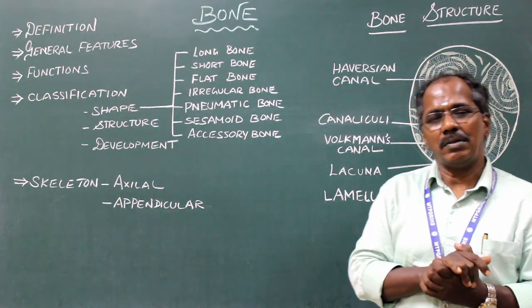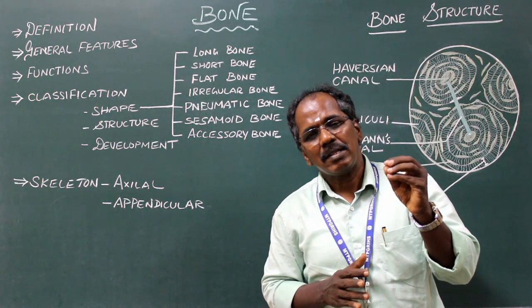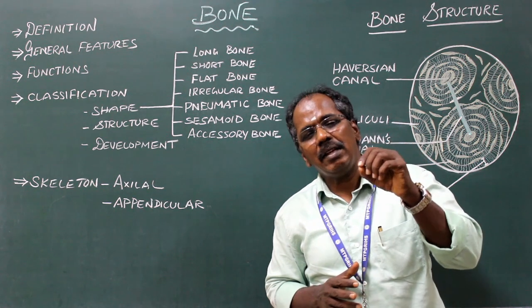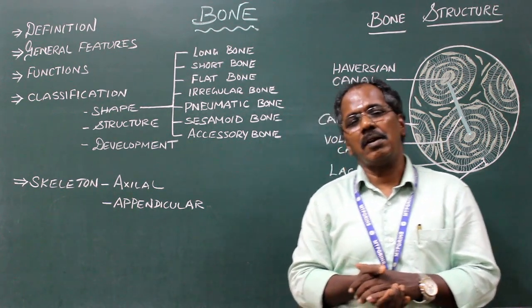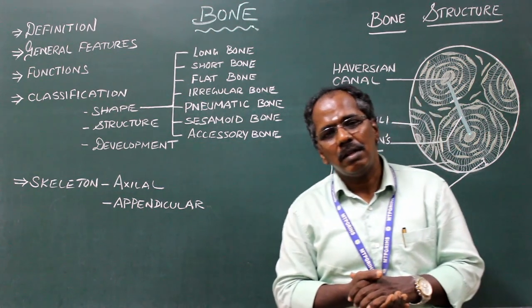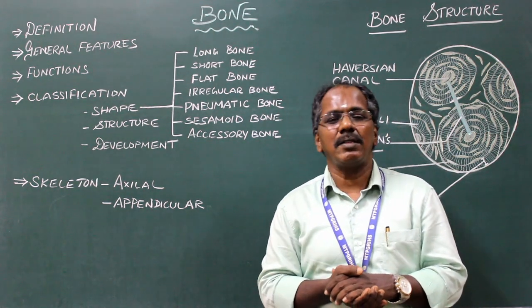Pneumatic bone. This bone contains air cavities or air-filled space in the bones. Examples: frontal, ethmoidal, sphenoidal, and maxillary bone.